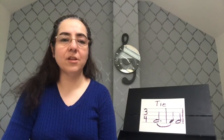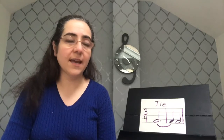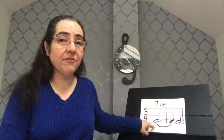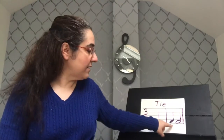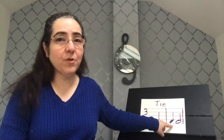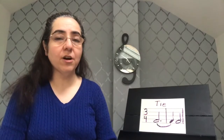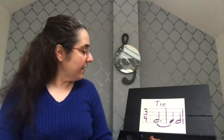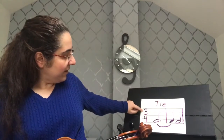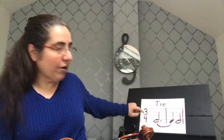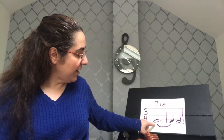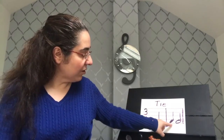This is another example of a tie. In this case, I have a dotted half note, which is worth three beats, tied to a quarter note, which is worth one beat. So three plus one is four. Again, if you look at the time signature, it says three-four. I'm only allowed a maximum of three beats in each measure, so I can't use a whole note. In order to get to four, I have to tie a dotted half note to a quarter note.